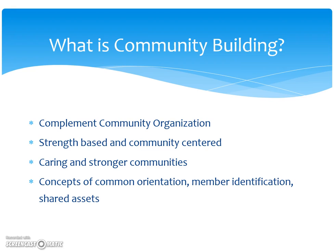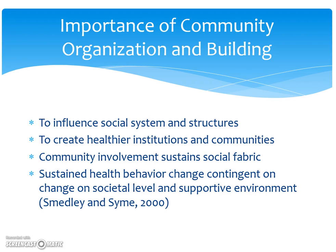Some of the concepts include common orientation — what is it that throughout the community is common. For East Texas, maybe religion is the common identifier, or a common theme may be the value of family. You also look for member identification — who do you have demographic-wise, and what are their shared assets.